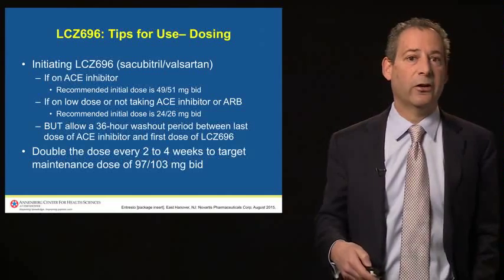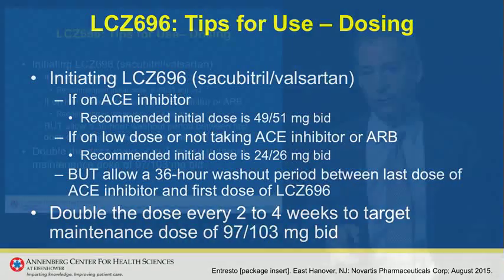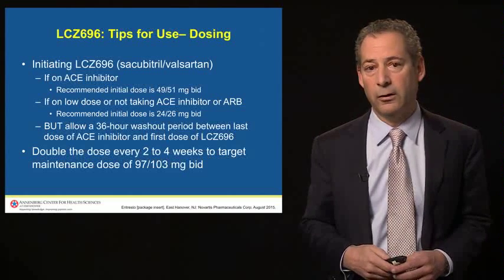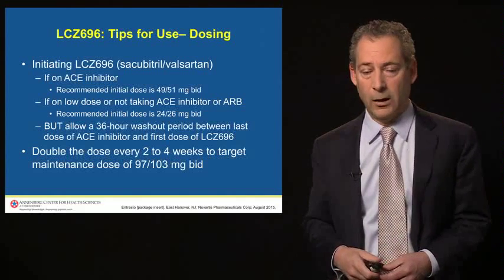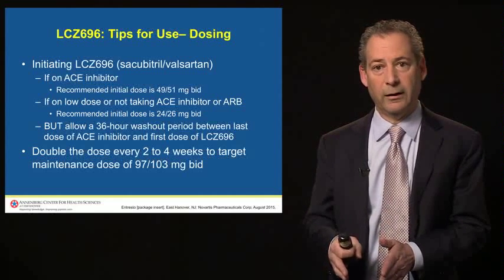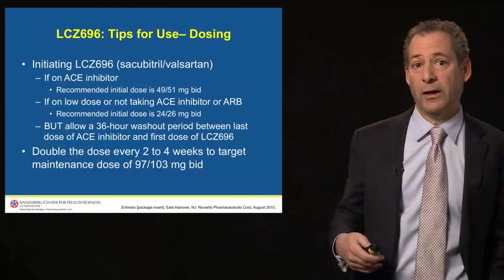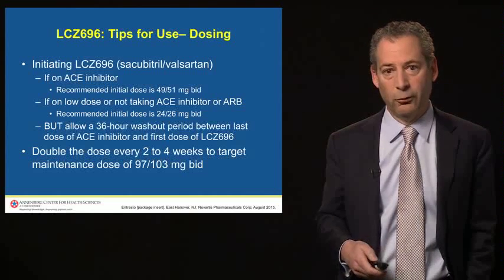To initiate LCZ-696, if a patient is on a low dose or not taking an ACE inhibitor or ARB, the recommended initial dose is 24/26 mg twice daily. It is very important to remember that to minimize the risk of angioedema, if a patient had previously been on an ACE inhibitor, we need a 36-hour washout period between the last dose of the ACE inhibitor and the first dose of LCZ-696. In the trial, if patients took an ACE inhibitor on Monday, they took nothing on Tuesday, and started LCZ-696 on Wednesday. We then double the dose every two to four weeks to achieve the target maintenance dose of 97/103 mg twice a day — the dose used in the trial.